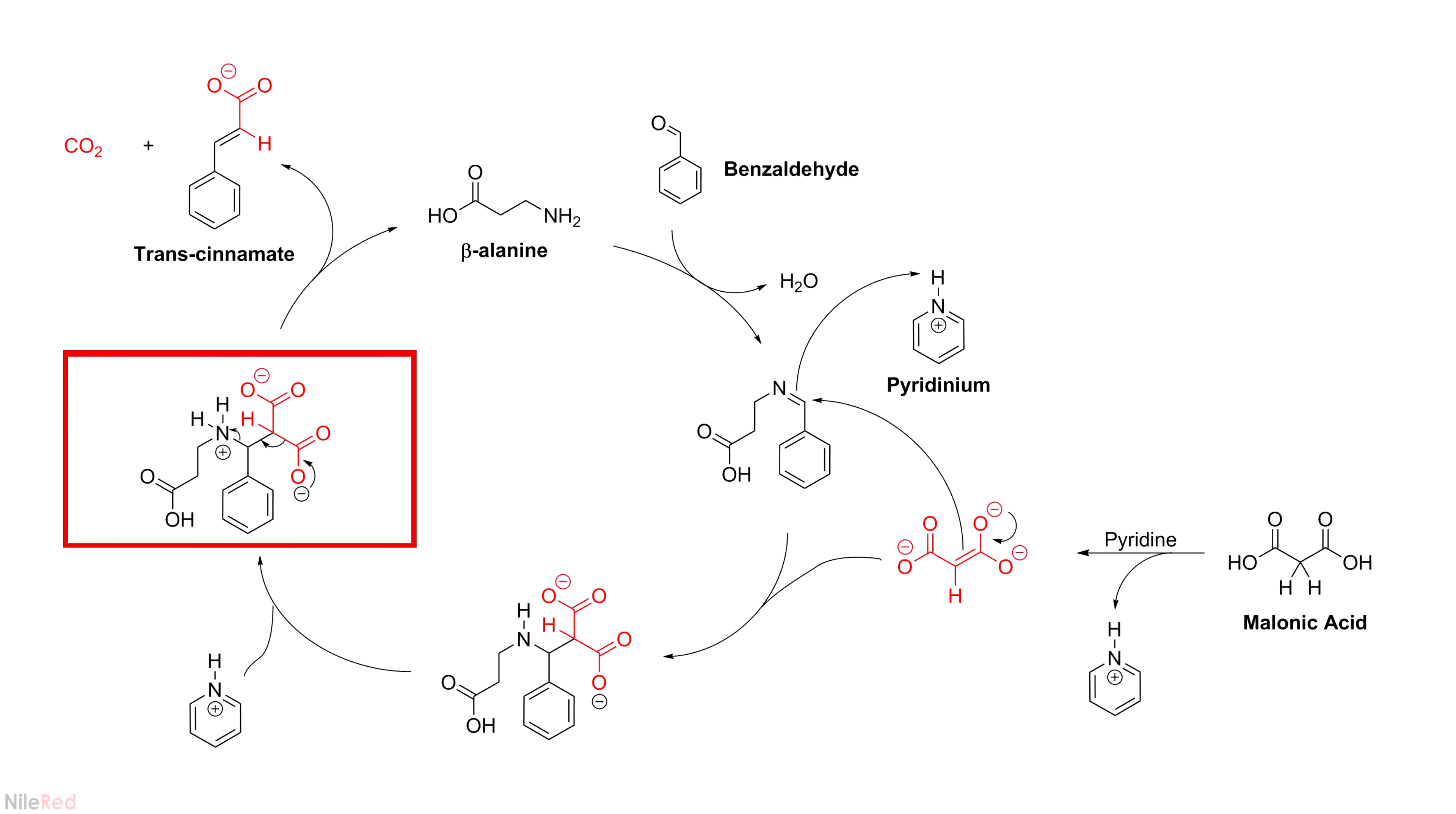The nitrogen of the beta-alanine is protonated, and then the decarboxylation reaction occurs. The decarboxylation produces our CO2, our cinnamate ion, and regenerates the beta-alanine. The fresh and regenerated beta-alanine can then continue through with another cycle.